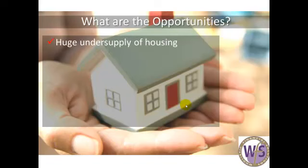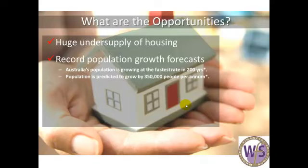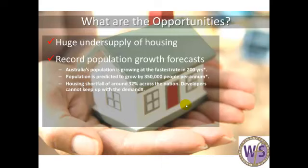In Australia, we still have a huge undersupply of housing. We still have record population growth forecasts. We are considered the lucky country still, and despite what's happening around the rest of the world, Australia continues to maintain economic growth. Our population is growing at the fastest rate in 200 years, predicted to grow by over 350,000 per annum. The housing shortfall of 32% across the nation simply means the developers and builders can't keep up with demand. All of these statistics have been gathered from reputable sources which will be shown below.